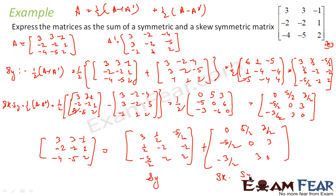So what I have done is I have converted this matrix as a sum of symmetric and skew-symmetric matrix. I was able to do this because this was a square matrix. Since it was a square matrix, I was able to convert this 3×3 matrix into a sum of symmetric and skew-symmetric.